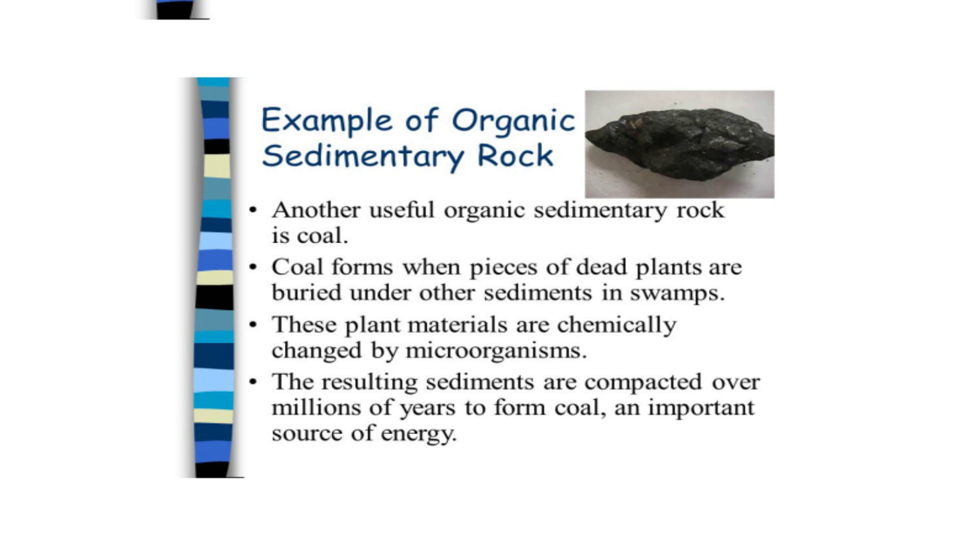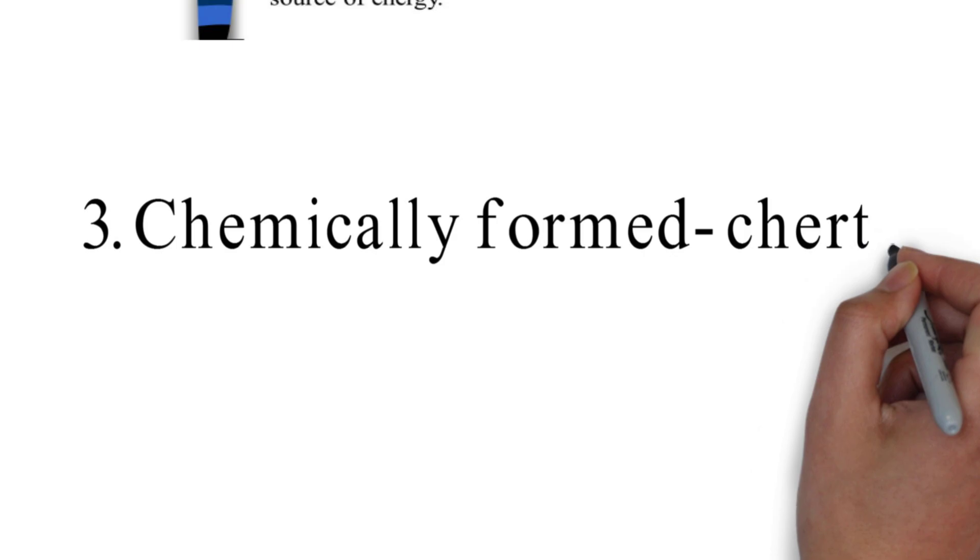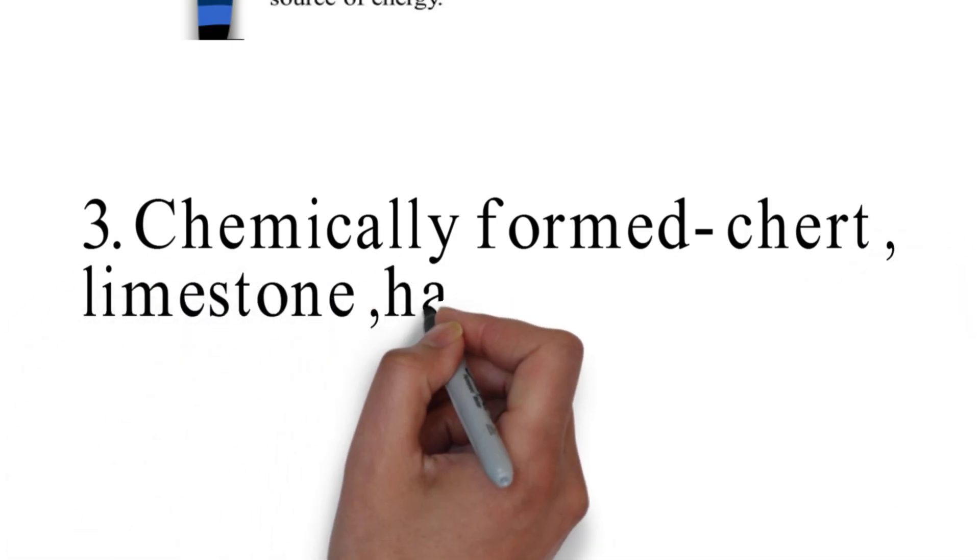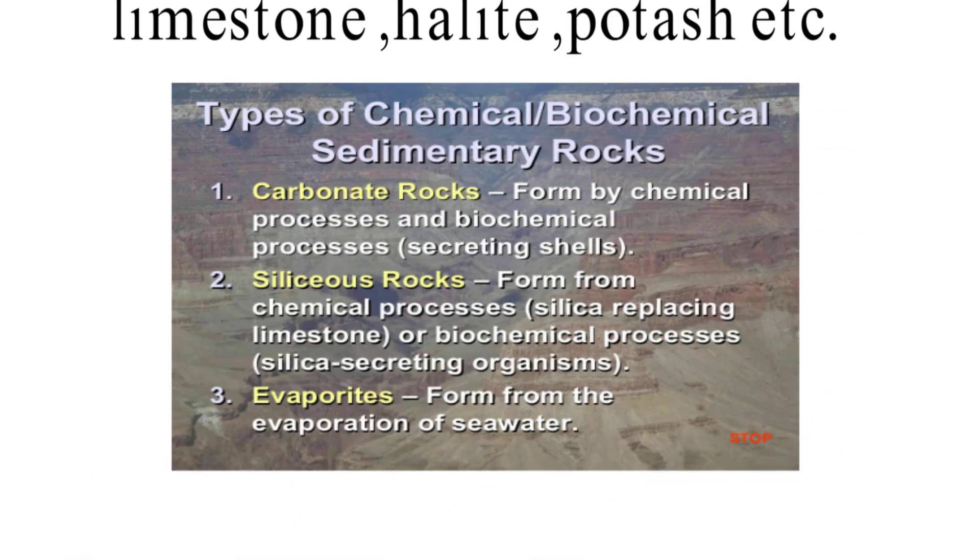Third type of sedimentary rock is chemically formed. Examples of these are chert, limestone, halite, potash, etc. These kinds of rocks are formed by chemical processes and biochemical processes. For example, carbonate rocks by secreting shells. Siliceous rocks form from chemical processes like silica replacing limestone or biochemical processes like silica secreting organisms. Third is evaporites, which form from the evaporation of sea water. So, these were the three types of sedimentary rocks.